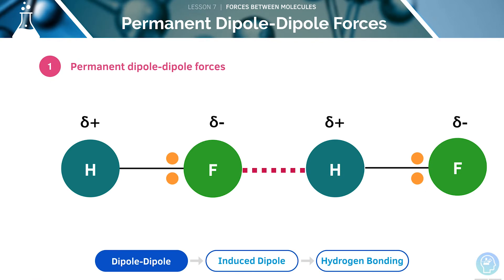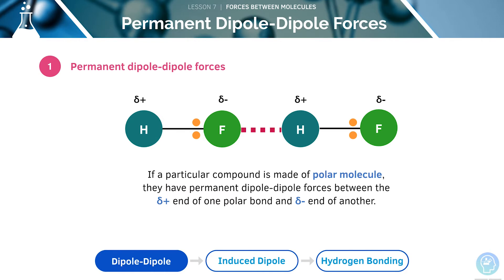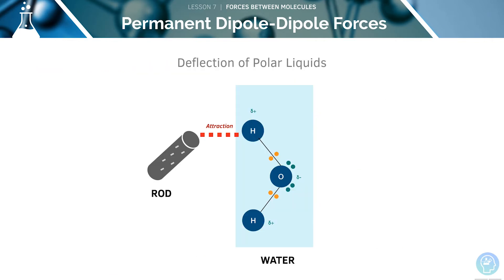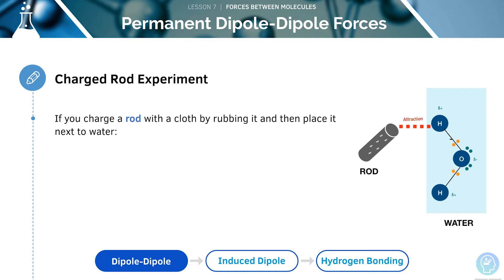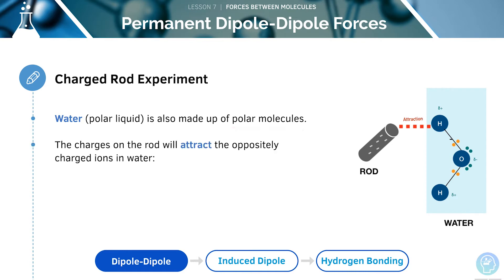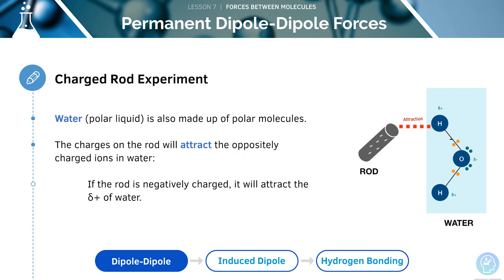Permanent dipole-dipole forces are found between polar molecules. There are weak intermolecular forces between polar molecules called permanent dipole-dipole forces. These forces are between the delta charges of each polar molecule in the compound. A polar liquid can be attracted by a charged rod — the attractive forces are always stronger than the repulsive forces. For example, if the rod is charged with a negative charge, it will attract the delta-positive charges of the water.